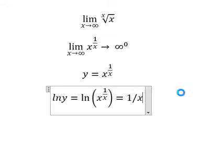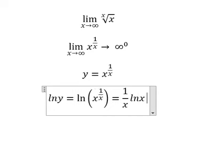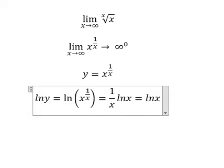And this gives us 1 over x times ln x. Or I can write it as ln x over x.